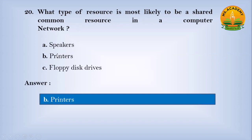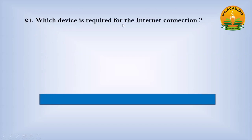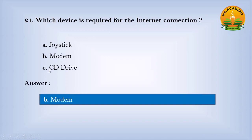What type of resource is most likely to be a shared common resource in a computer network? Option A Speakers, option B Printer, option C Floppy disk drives. Answer: B. Number Printer. Which device is required for the internet connection? Option A Joystick, option B Modem, option C CD driver. Answer: B. Number Modem.